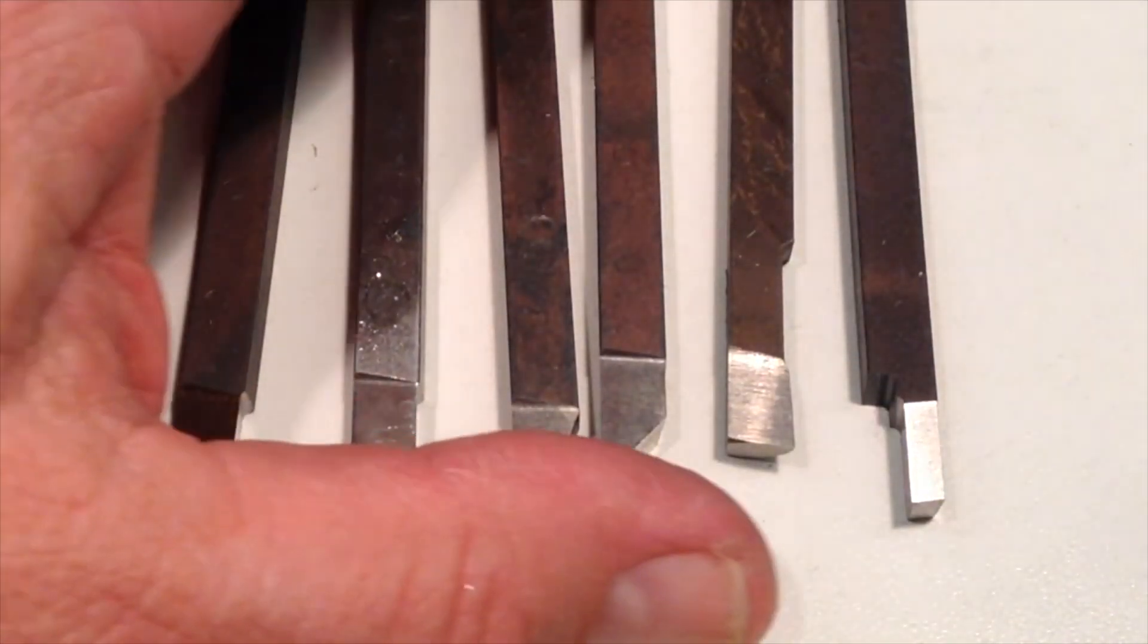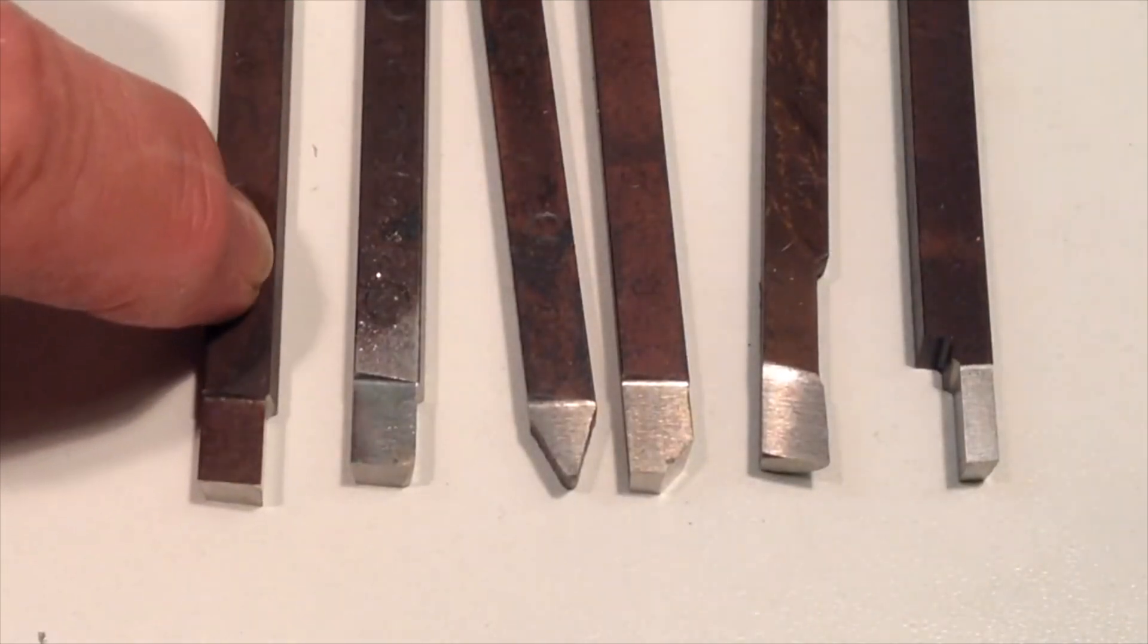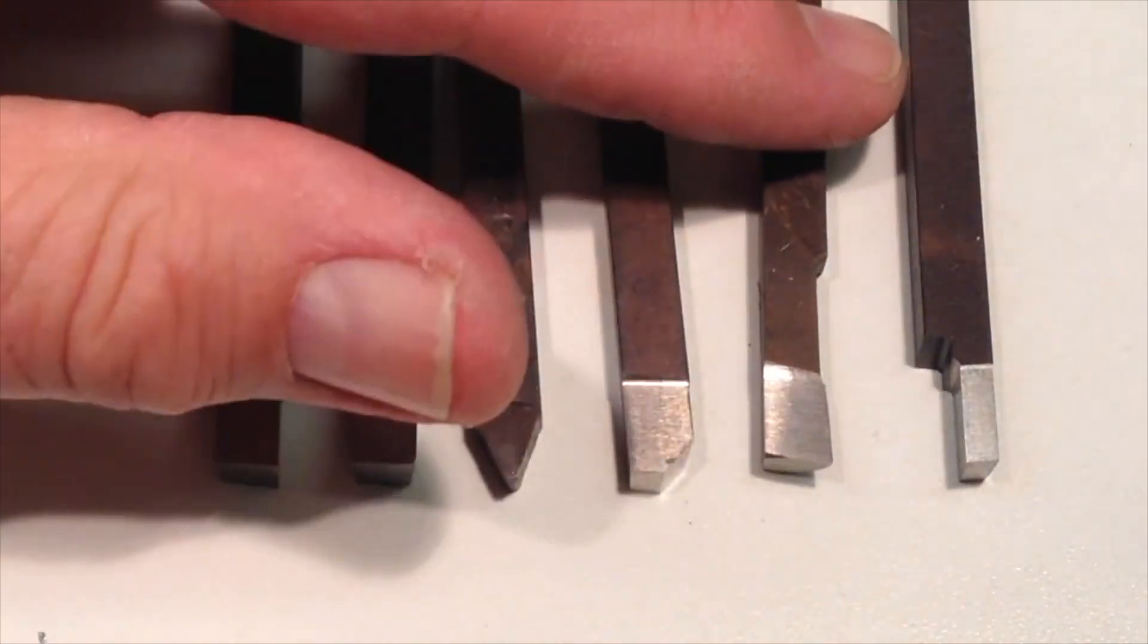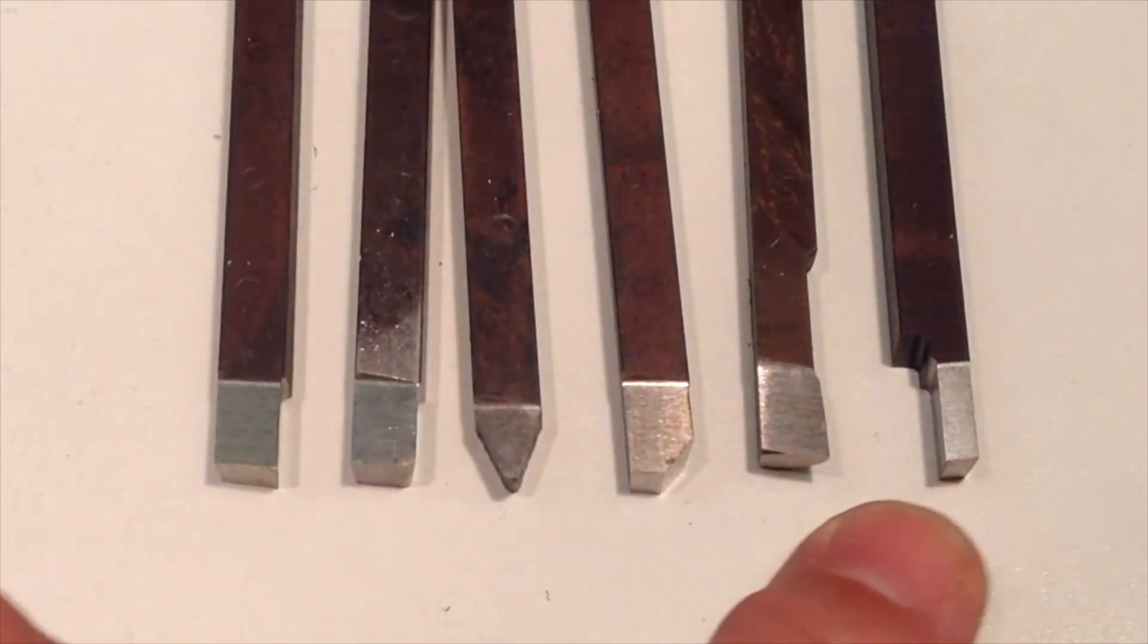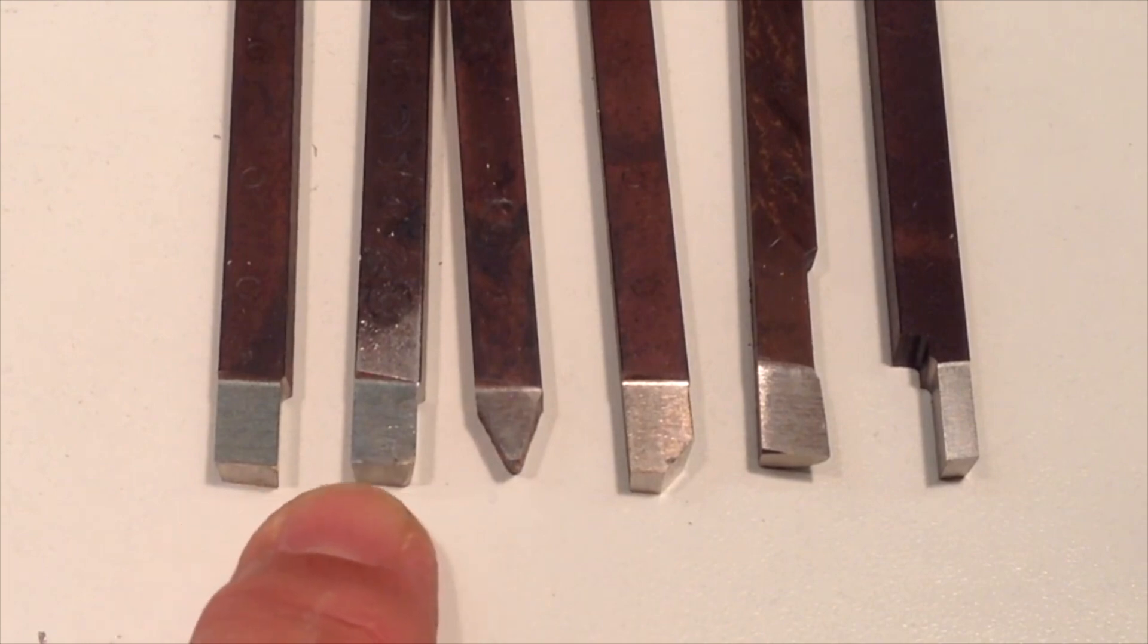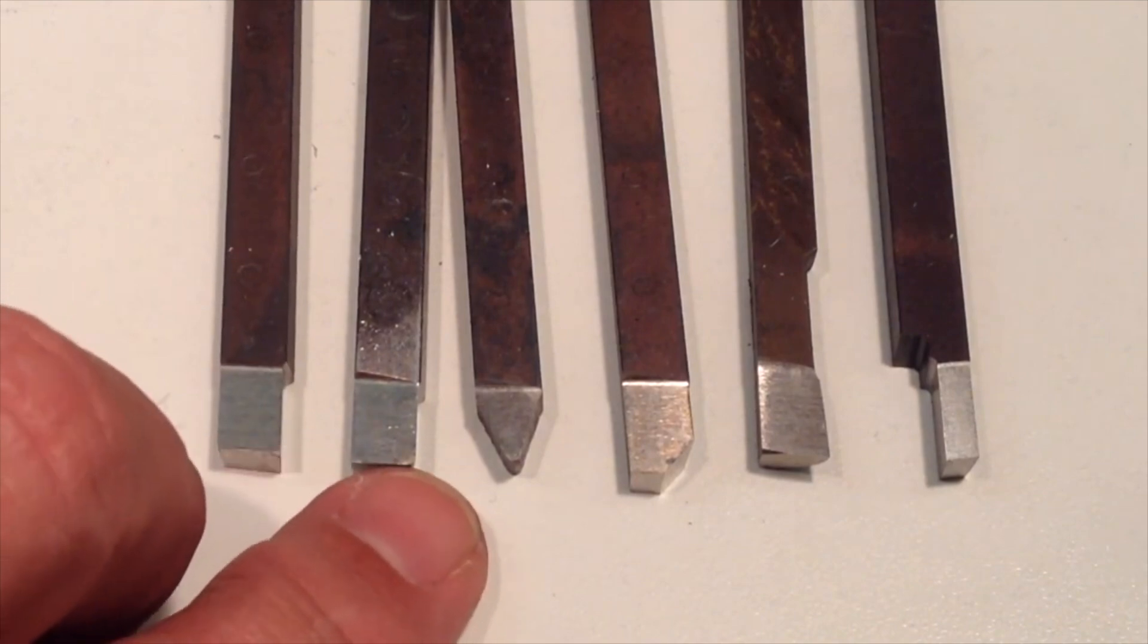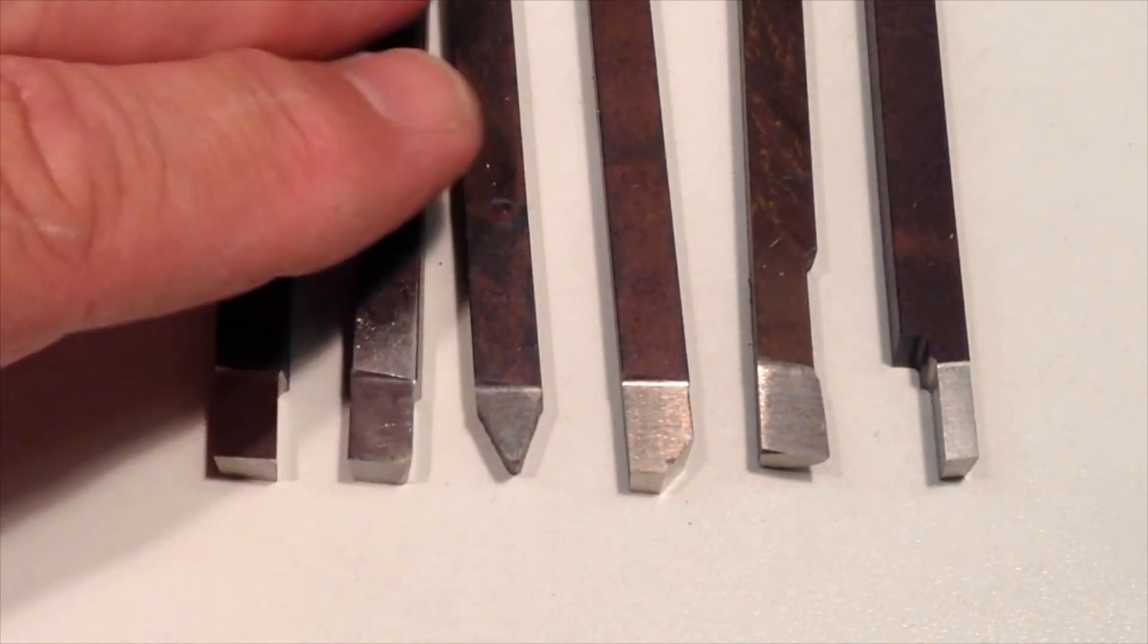Now one other choice for cutting tools are these. These are high speed steel quarter inch cross section tools. And they are pre-sharpened for you into a variety of cutting shapes. This one here is a cut off tool. This is a boring tool, chamfering tool. This is a turning tool. And these two can be used for facing or turning depending on what you're trying to do. This one has a sharp edge for getting into corners. And this one has a slightly rounded edge for finished turning or facing.